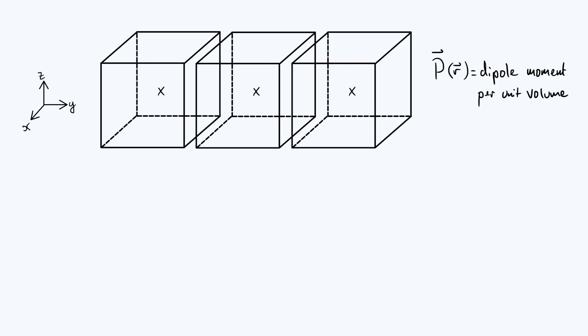Now because these are infinitesimal cuboids aligned with this Cartesian coordinate system, it would make sense to label the sides as follows: call that one dy, this one dx, and the vertical one dz.